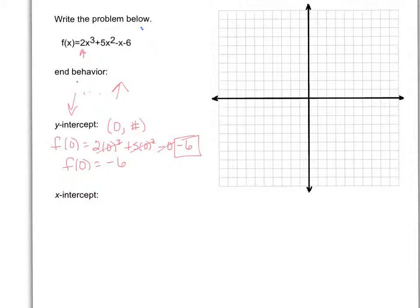Let's put that on the graph. So we now have the point 0, negative 6. So I'm going to count down 6: 1, oops, 1, 2, 3, 4, 5, 6, and make a point. And that's my y-intercept. Cool.